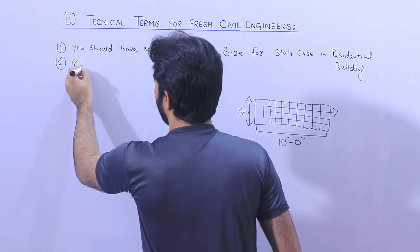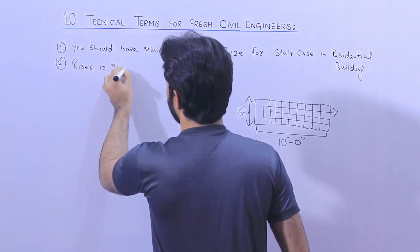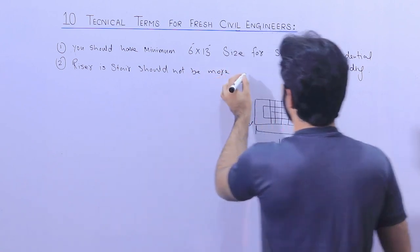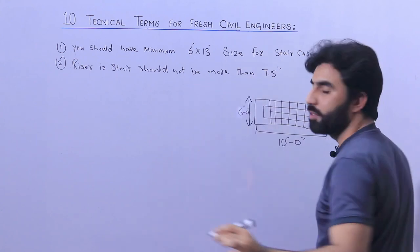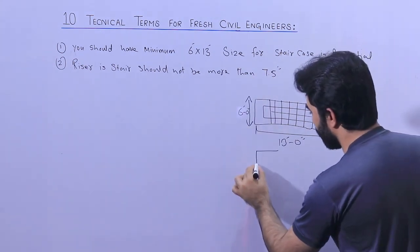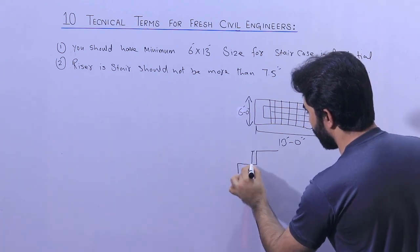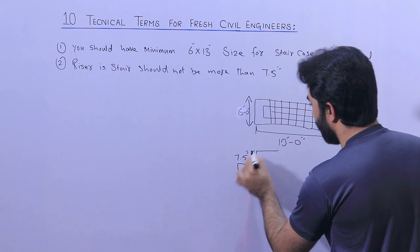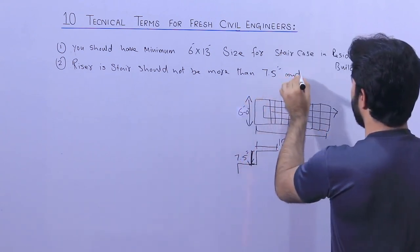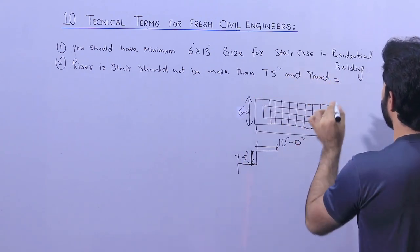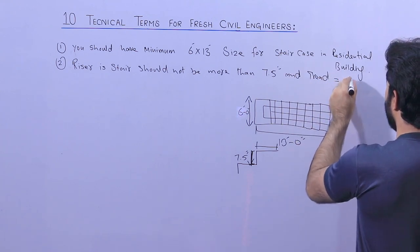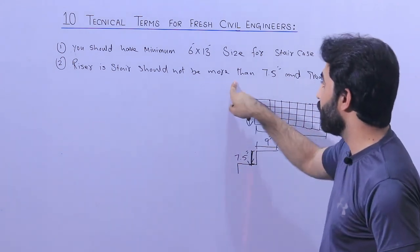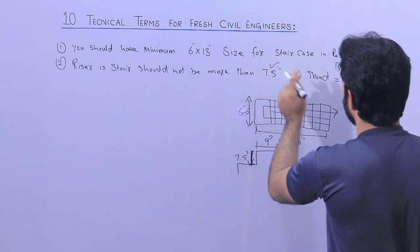The second term is riser and the third is tread. The riser should not be more than 7.5 inches. As you can see, this is tread and this is riser. The tread should not be less than 9 inches — that is the minimum. So remember: riser maximum 7.5 inches, tread minimum 9 inches.